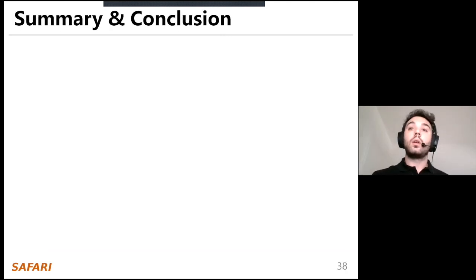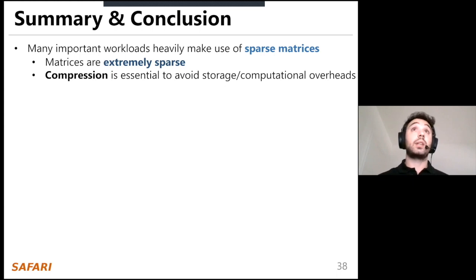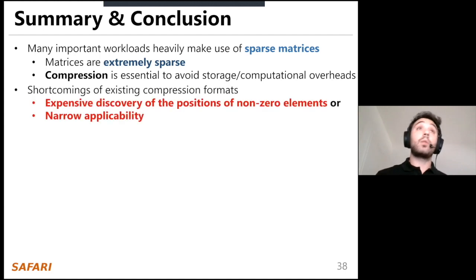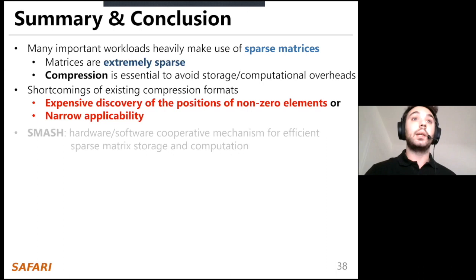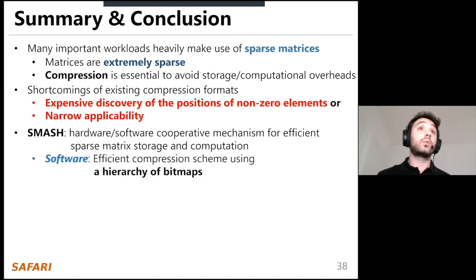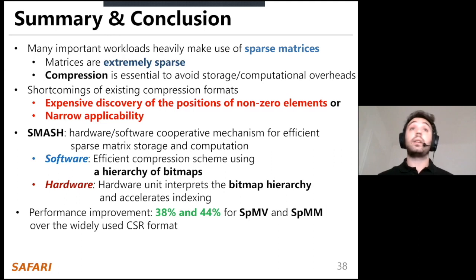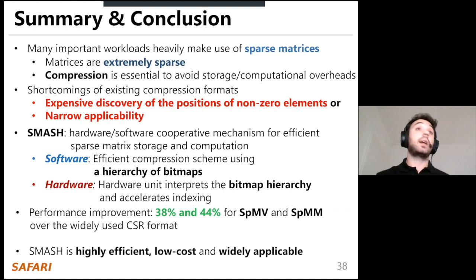In conclusion, many important workloads heavily make use of sparse matrices. Matrices in these workloads are extremely sparse, and compression is an essential tool to avoid storage and computational overheads. Existing compression formats have shortcomings: expensive discovery of non-zero element positions and narrow applicability. We introduce SMASH, a hardware-software cooperative mechanism for efficient sparse matrix storage and computation. It uses a hierarchy of bitmaps on the software side and a hardware unit that interprets this hierarchy to accelerate indexing. SMASH provides 38% and 44% average performance improvement for SPMV and SPMM respectively over CSR, and is highly efficient, low cost, and widely applicable to sparse neural networks, sparse convolutional neural networks, and multiple sparse workloads.